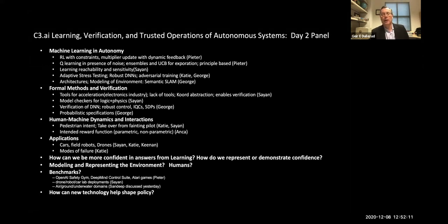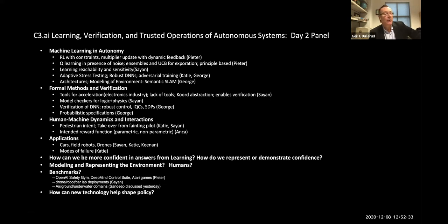The question is: what are the biggest technical barriers, from your perspective, to safe deployable autonomy? I like the way Peter put it earlier — how do we get that final 1%, the very difficult 1%? What are the most interesting or important barriers from your perspective? I'm going to let Keenan go first.